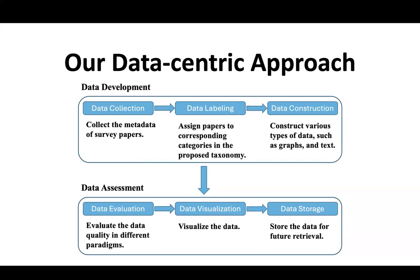In the data development stage, first, we collect the metadata of 112 survey papers about large language models. Second, we propose a new taxonomy and then label each paper to corresponding categories in the taxonomy. Third, we construct various types of data, such as graphs and text.